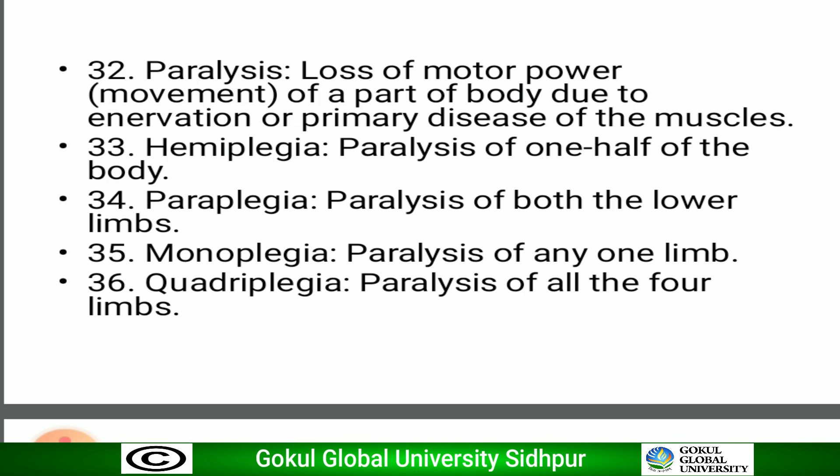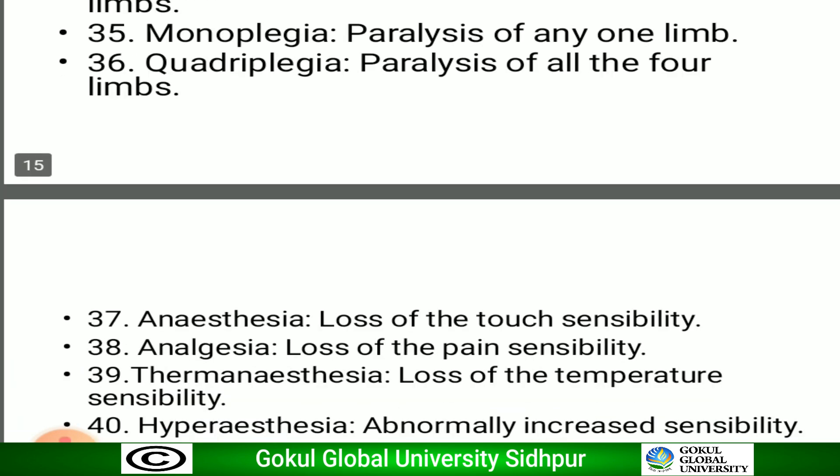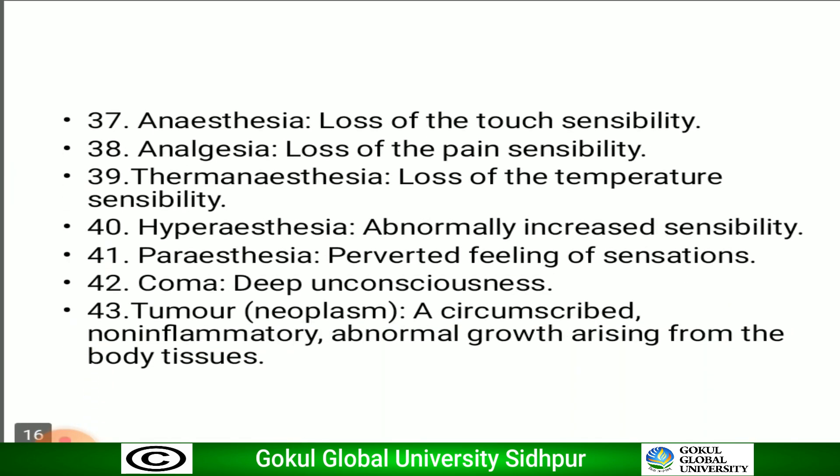Hemiplegia is paralysis of one half of the body. Paraplegia is paralysis of both lower limbs. Monoplegia is paralysis of any one limb. Quadriplegia is paralysis of all four limbs. Anesthesia is loss of touch sensibility. Analgesia is loss of pain sensibility.